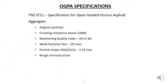The specification to look at is TNZP11, which covers the requirements for open graded porous asphalt. The requirements are very similar to those for stone mastic asphalt and chip sealing chips: the aggregate needs to have angular particles, crushing resistance above 230 kN (the same as for sealing chip), weathering quality index AA or BA, 1% maximum of weak particles, a particle shape of 2.25 maximum, and a rough microstructure.